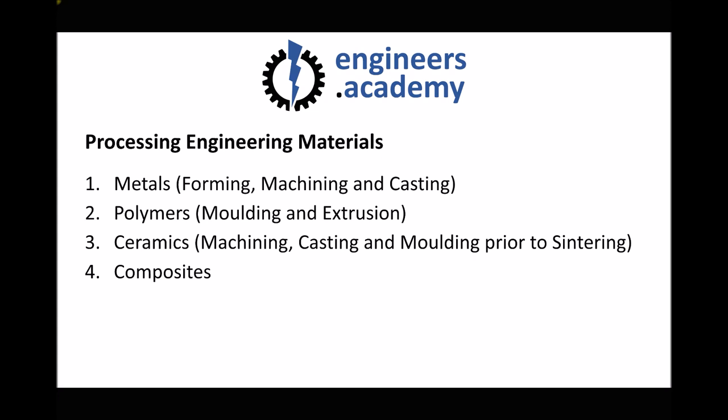In an earlier tutorial we looked at the processes that can be used in order to select engineering materials based on their properties. But another important consideration is whether the materials that we select can actually be formed into the shape that we desire for a given component. So in this video we're going to take a brief look at some of the manufacturing processes that can be used when processing metals. We're going to begin with metals by looking at forming, machining and casting processes.